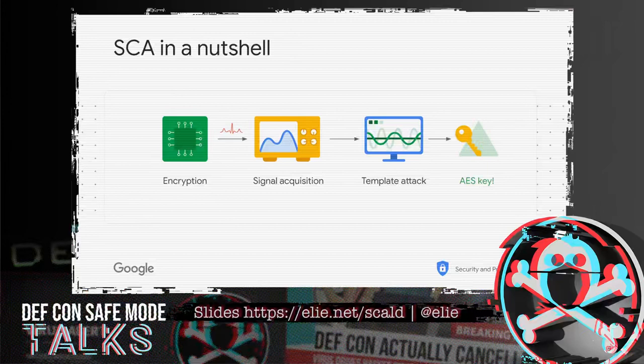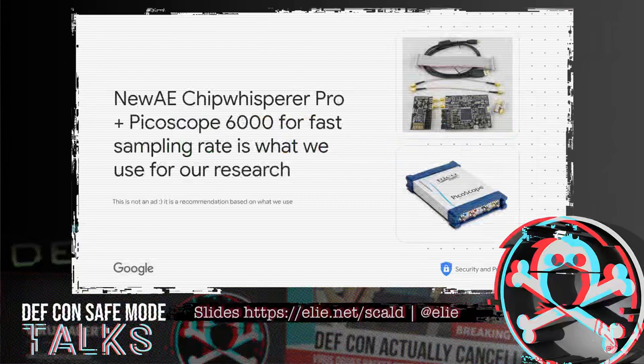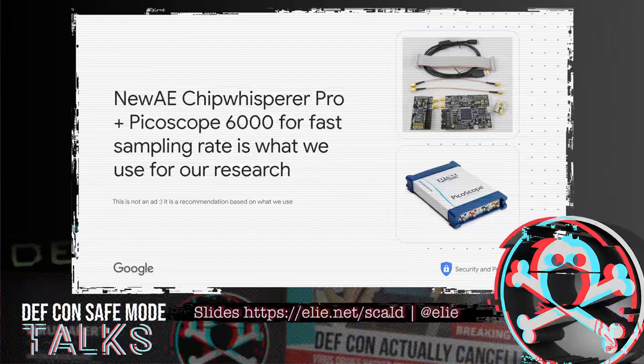In terms of hardware we use — and this is what works for us, not necessarily the best — we use a ChipWhisperer Pro. For some of our work, not this talk, we also use a Picoscope 6000 when we need faster sampling. Last year when we talked about SCAMON — a way to do a side-channel attack using machine learning — we did use a Picoscope. For this work we just use the plain old ChipWhisperer.